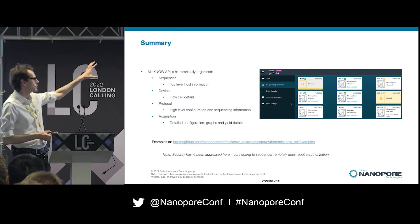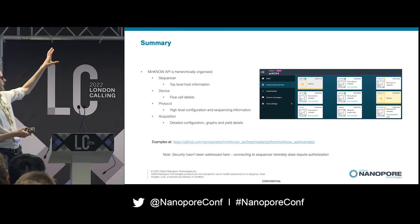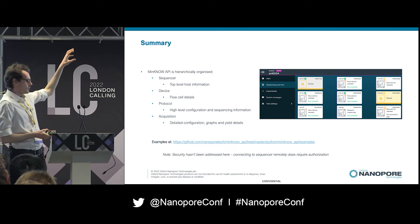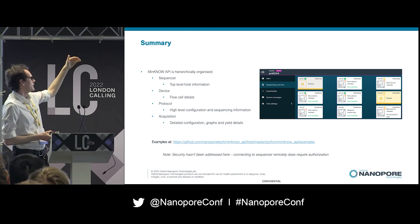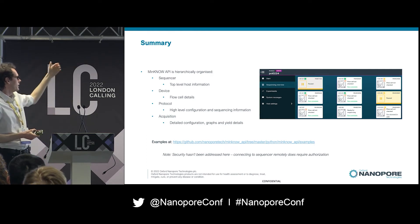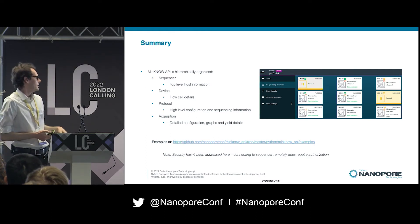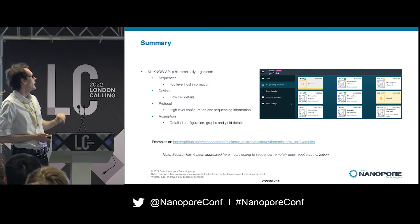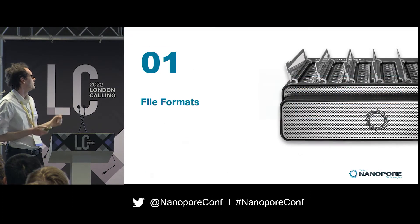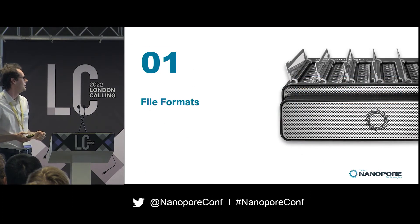So to summarize, the API is hierarchical and we've got a lot of examples available. Now, file formats.